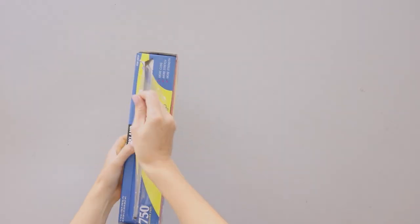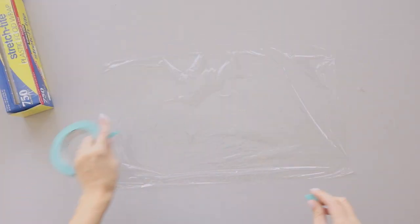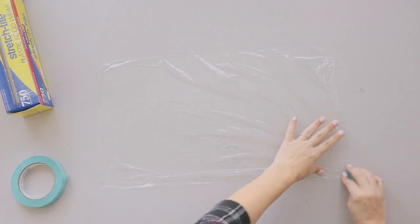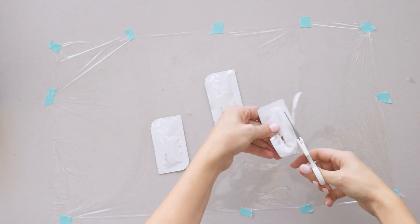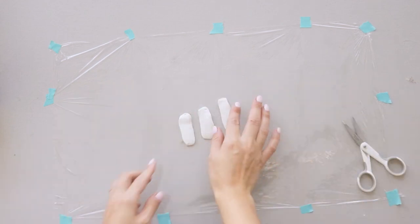To make my candle holder, I started by lining my table with saran wrap because Sugru tends to stick to surfaces really well. I then pulled out three packets of Sugru and rolled them into a ball.